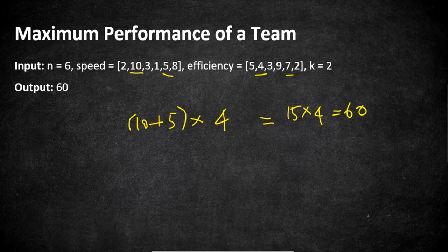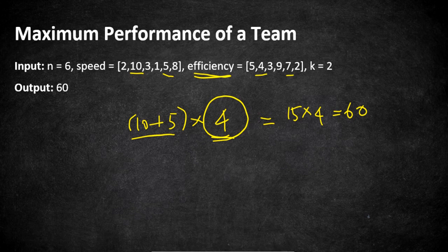So how are we going to approach this? The first intuitive solution: if we are trying to maximize performance, the values of speed and efficiencies must be maximum. But since we take the minimum efficiency out of all selected employees, if we are selecting k employees, the efficiency to be considered is going to be the lowest out of all selected employees.